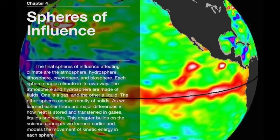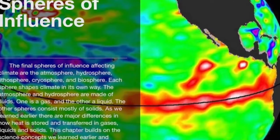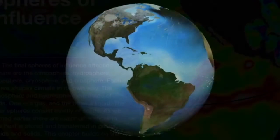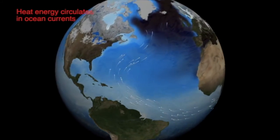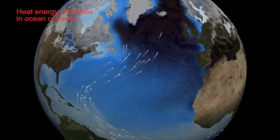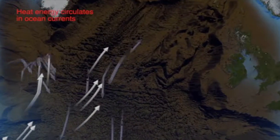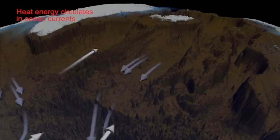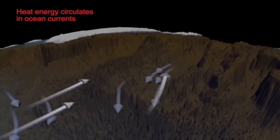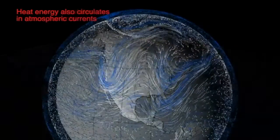Chapter four has nine videos spanning almost 18 minutes. Chapter four's focus is on the different spheres that influence Earth's climate. These spheres are the atmosphere, hydrosphere, lithosphere, cryosphere, and biosphere.